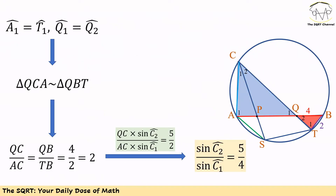Now let's look at two triangles, one in blue and one in red, and show they are similar. Since angles Q1 and Q2 are equal, and T1 and A1 are equal, these triangles are similar. Therefore QC over AC equals QB over TB. We know QB equals 4 and TB equals 2, so QC over AC equals 2. Substituting into our earlier equation gives sine of C2 over sine of C1 equals 5 over 4.